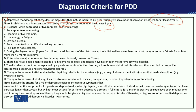Criteria B is about the presence, while depressed, of two or more of the following six symptoms. Number one is poor appetite or overeating — the child is either eating very little or eating excessively. You need to be careful here to rule out dieting.